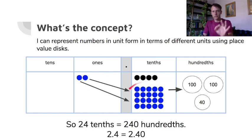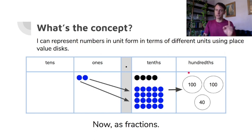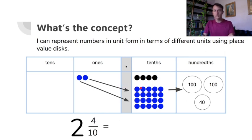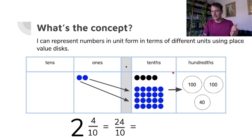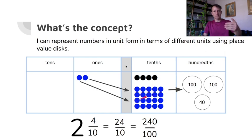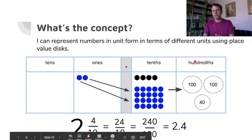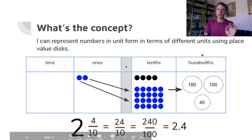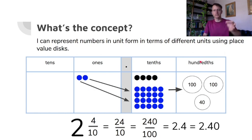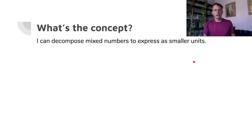2.4 equals 2.40; two and four tenths equals two and 40 hundredths. Now in fractions: two and four tenths equals 24 tenths, which equals 240 hundredths — 24 dimes, 240 pennies. We see the connection. As a decimal: 2.4, or we could write it as 2.40 — two and four tenths, two and 40 hundredths. Excellent.